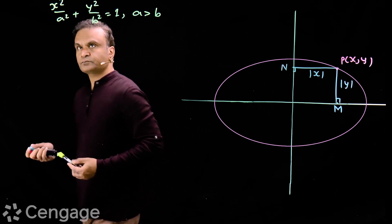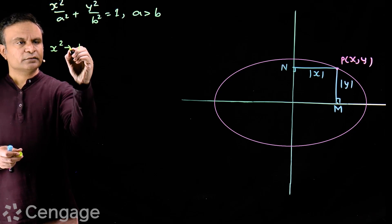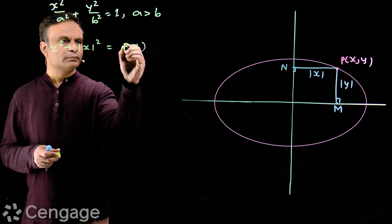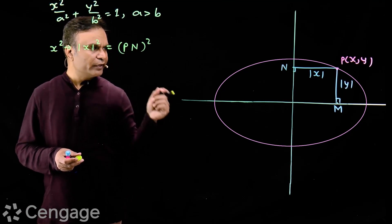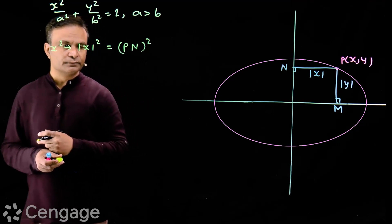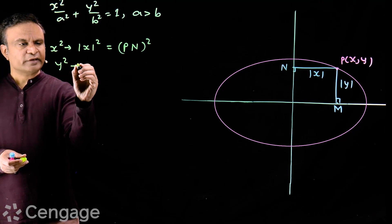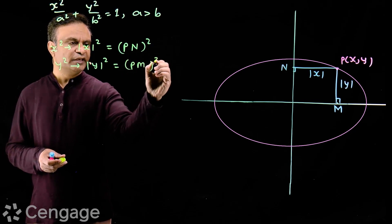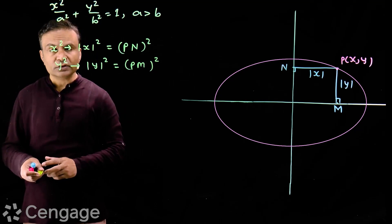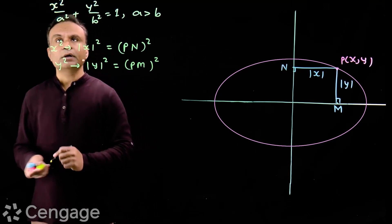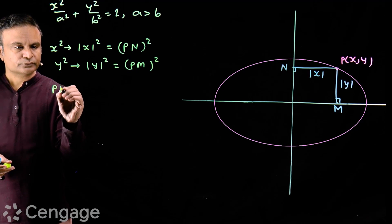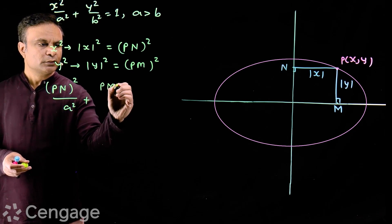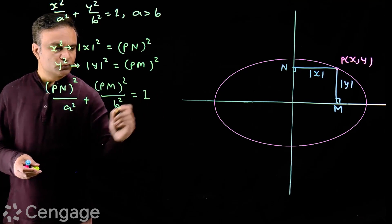In this equation, I can replace x² by the square of |x|, which equals the square of distance PN, where PN is the distance of variable point P on the ellipse from its major axis. And I can replace y² by the square of |y|, which equals the square of distance PM, where PM is the distance of variable point P on the ellipse from its major axis. So this equation changes to: distance PN² divided by a² plus distance PM² divided by b² equals 1.